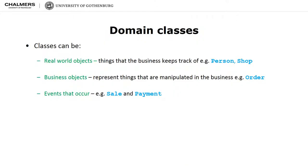As you might remember in part one of this series we introduced the definition of Ivar Jakobsen. The domain model contains concepts which could be objects or events in the business environment. For instance, objects could be real world objects, things that the business keeps track of, physical things in the real world like a person or shop, tangible objects.